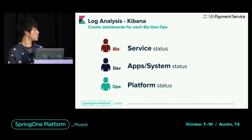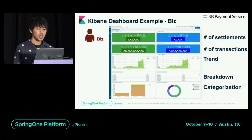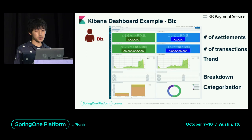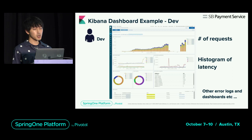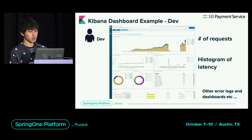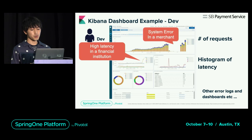I will introduce the dashboard that we were looking at during a recent event ticket settlement. From the perspective of Biz, you can look at the number of payments and transaction volume. From Dev's perspective, we can see the number of application requests, latency, etc. You will notice abnormalities at first glance. We were able to immediately detect that requests were not received due to a merchant system error, and that the latency was increased in a specific financial institution.